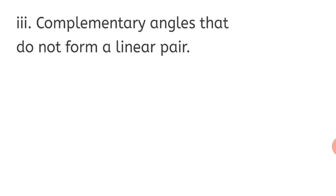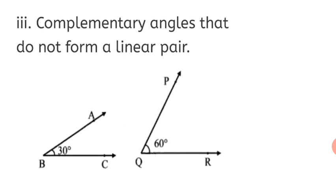Question 3: Draw complementary angles that do not form a linear pair. Yes, we can draw two separate complementary angles — they will not form a linear pair, since supplementary angles form a linear pair. Draw two angles whose sum is 90 degrees; for example, 30 degrees and 60 degrees. Name the angles, such as Angle ABC and Angle PQR, and show the measures to prove they are complementary and do not form a linear pair.